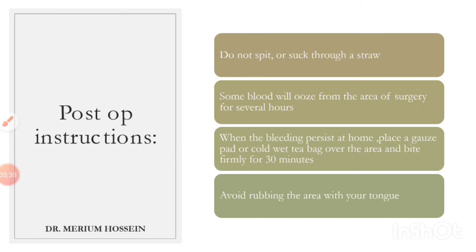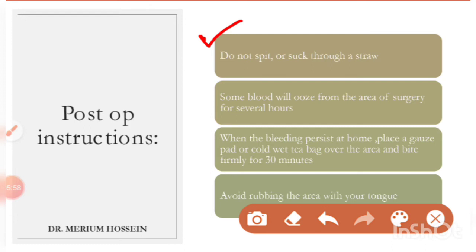Now for patient instructions — the first is: no spitting. No spitting, no sucking on a straw, and no sucking on cigarettes. Spitting and sucking create pressure in the oral cavity that dislodges the clot and interferes with healing. The patient also needs to be informed that some bleeding — saliva tinged with blood — will occur for about 24 hours, and this is completely normal; there is no need to panic.